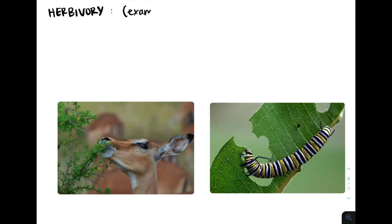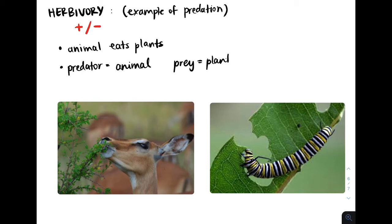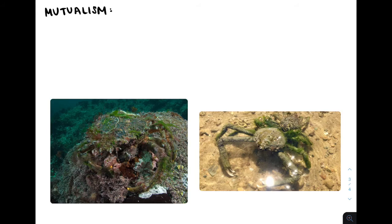Now one example of predation is herbivory. This is also a plus-minus interaction. An animal eats plants — for example, on the left we have a deer eating a tree and on the right we have a caterpillar eating a leaf. So the animal is benefited and is the predator, while the plants are harmed and are the prey.